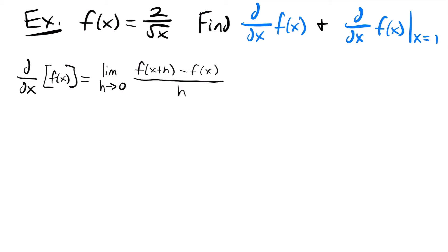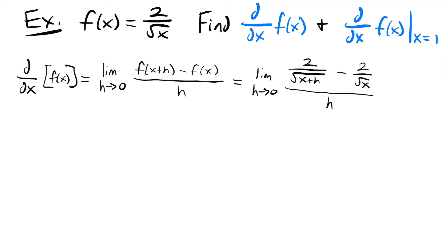For this example I used h instead of delta x — you'll see that in textbooks, it doesn't matter what the variable is. We plug in x plus h and subtract the function: the limit as h approaches 0 of [2 over the square root of (x + h)] minus [2 over the square root of x], all divided by h. This is an indeterminate form because h in the denominator would be 0, so we get a common denominator for those fractions.